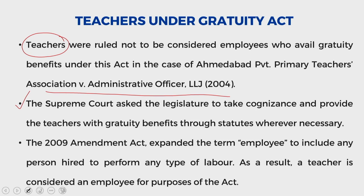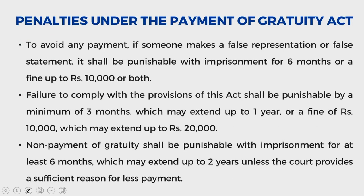The court ruled that private schools should not succeed when asserting a vested right resulting from a flaw, because acceptance would be at the expense of teachers who would otherwise lose the intended advantage. The court upheld the Amendment Act's legality and ordered private schools to pay employees and teachers within six weeks, along with interest in accordance with the Act's provisions. If this is not done, employees and teachers may file a lawsuit in the appropriate forum. This has been a phenomenal change — private educational institution teachers are now firmly within the ambit of this Act.